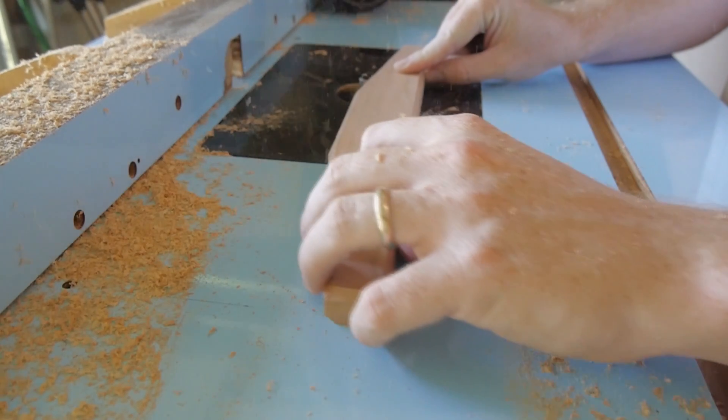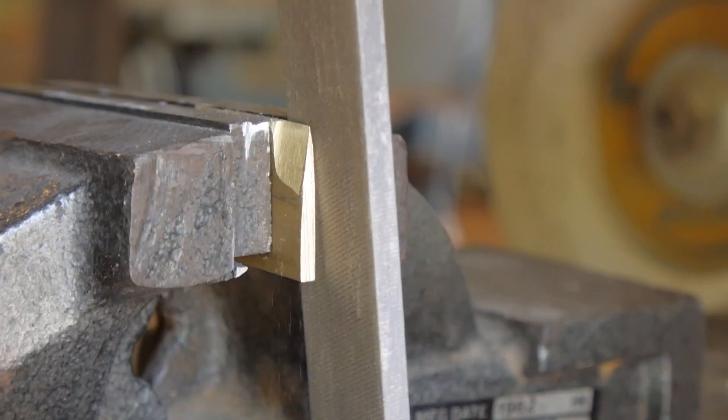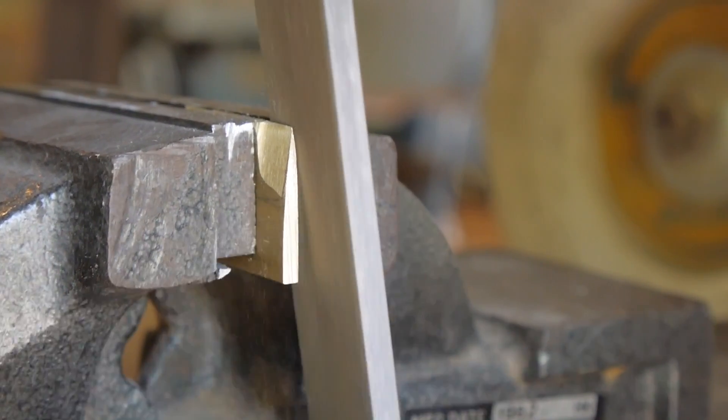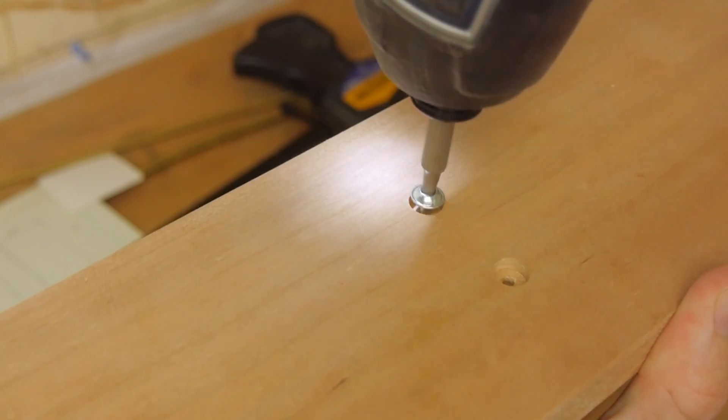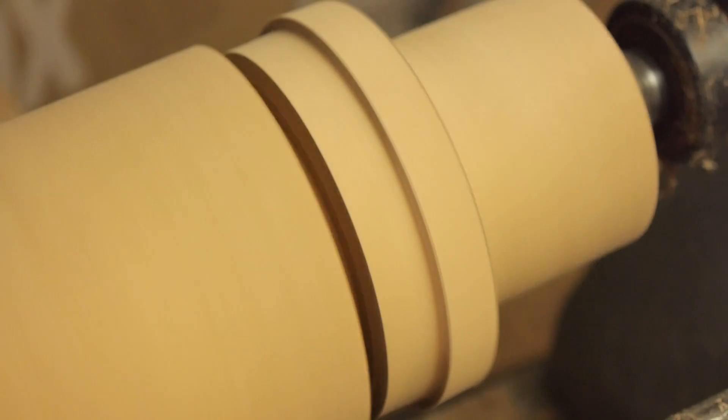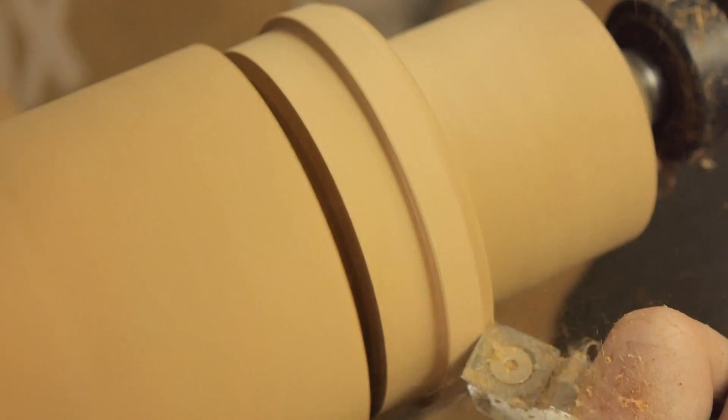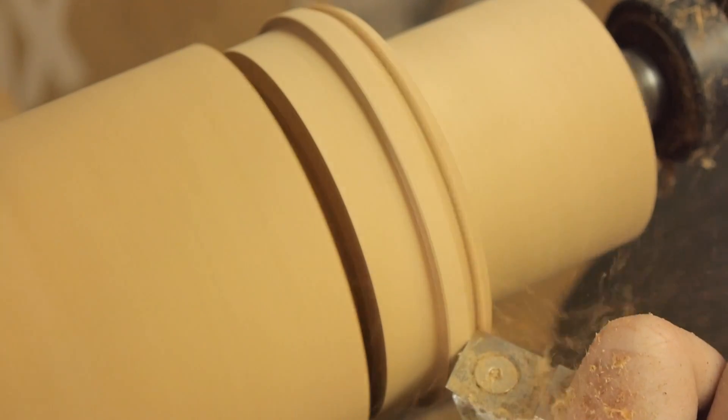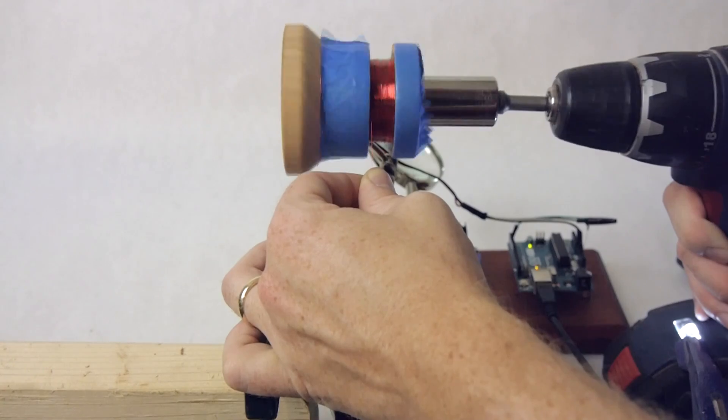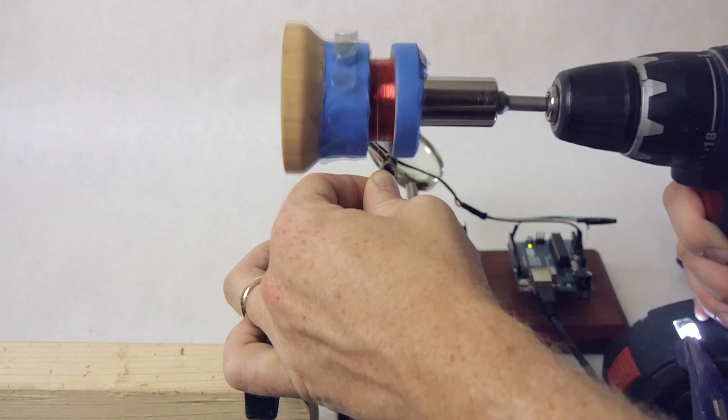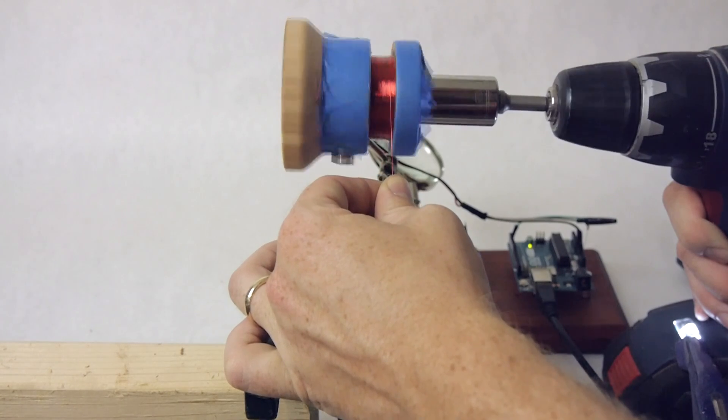I built a model to help illustrate how it works. This watt balance is based on a design created by a few scientists at the US National Institute of Standards and Technology, and there's a link to their paper in the description. Their design used Legos, but I really like the juxtaposition of a precision scientific instrument made with a natural material, so I made mine out of wood. And there's a separate video all about how this was built that I'll link below.